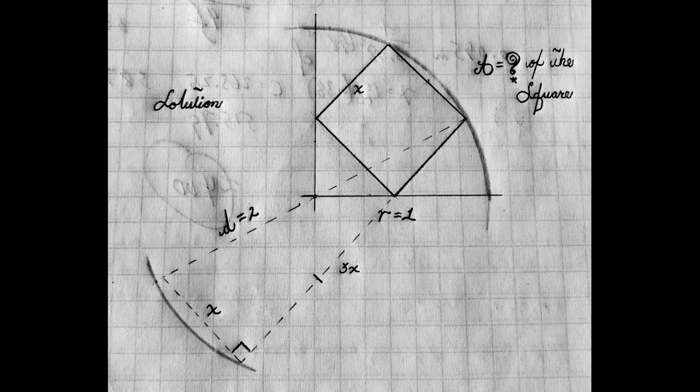And now I have a simple Pythagorean theory going here. I have the leg that I determined to be x and of course three lengths of that square are 3x and my diameter of two. So all I did was say x squared plus 3x quantity squared equals 2 squared.